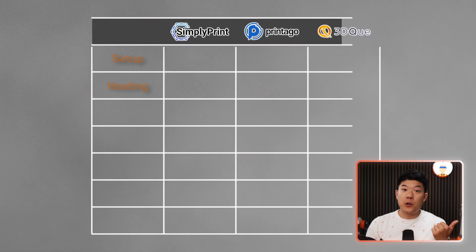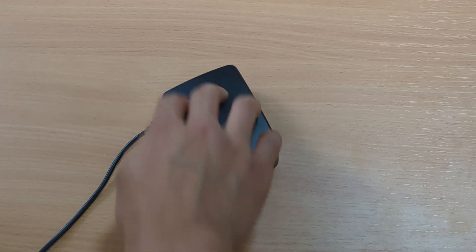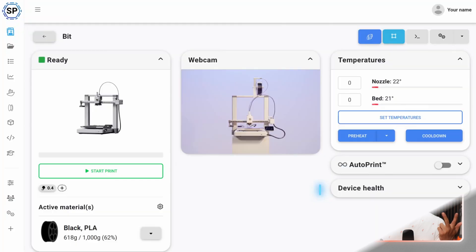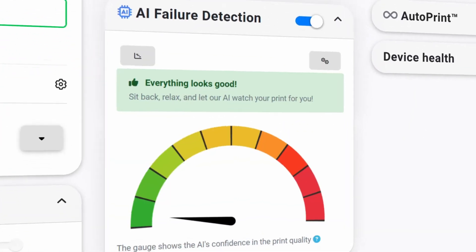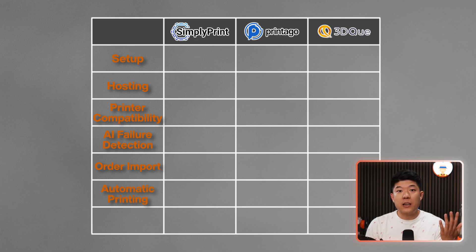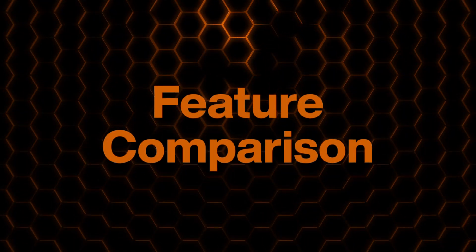Here are the categories we'll compare across these softwares: setup and hosting — how complex is it to get running; printer support — does it work with your current printer and other brands beyond Bamboo Lab; failure detection — crucial for preventing waste and printer damage; Etsy and Shopify import — can orders flow directly into your print queue; automatic printing — can it handle a full cycle from print completion to starting the next job; and unique strengths — what does each software do better than anyone else.